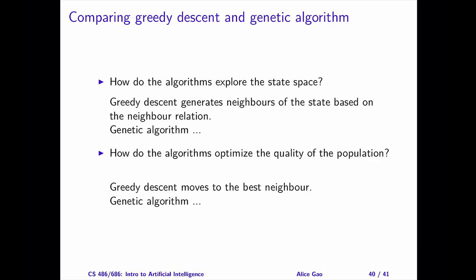The goal of the randomized process is to generate a child state that's quite different from the two parents, allowing the algorithm to explore a new region in the search space. Next, let's talk about optimization. Every local search algorithm tries to optimize the quality of the current state or population. Greedy descent does this by moving to the best neighbor. The genetic algorithm optimizes the population by choosing states for reproduction based on their fitness — the higher the fitness, the more likely the state is chosen, so if two parent states have high fitness, the child will likely have high fitness as well.